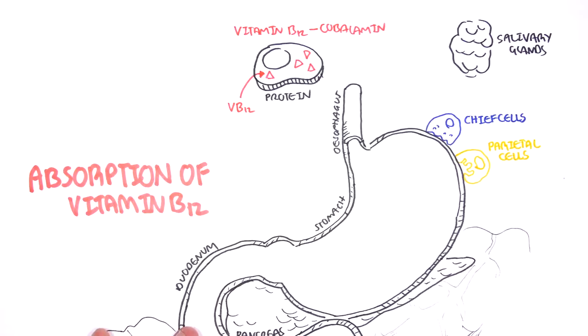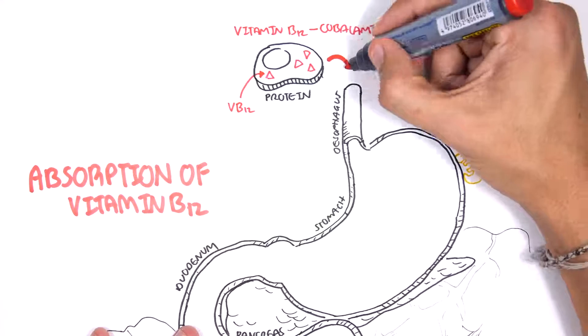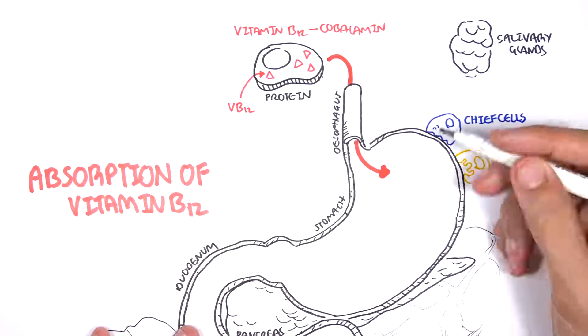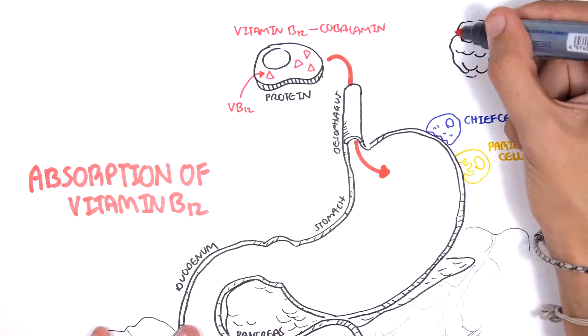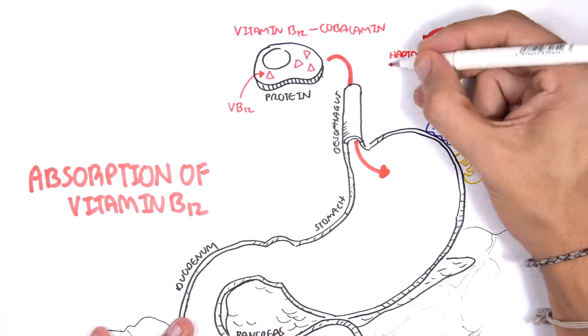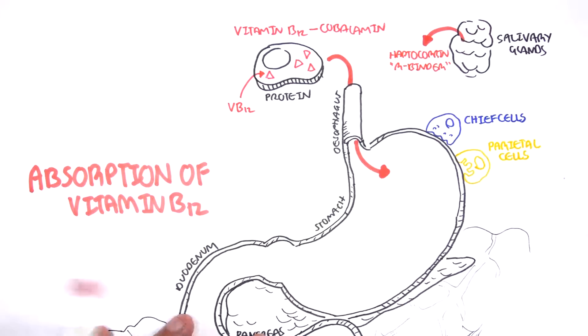So the red meat is eaten and travels to the stomach. It has already been partially digested by the mouth. The salivary glands secrete an important substance for vitamin B12 absorption called haptocorin, also known as R-binder.